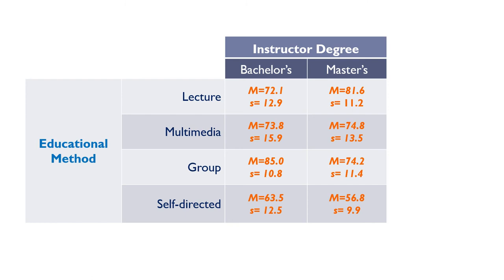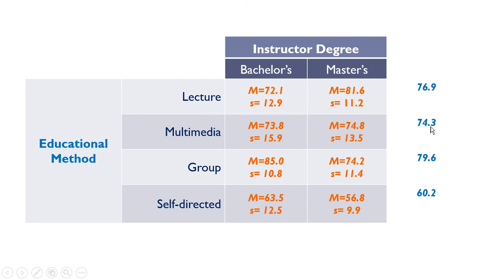We also need the marginal means to really understand what's going on. These are the means of the different instructional types — if you combine the bachelor's and master's students' grades together, you get an effect of educational method on students' grades. Lecture has a mean of 77, then multimedia is lower, group learning is lower, and self-directed learning is the lowest. You could also collapse and look at the effect of the instructor's degree: the bachelor's degree instructors' students, on average, did better than the master's level students did.